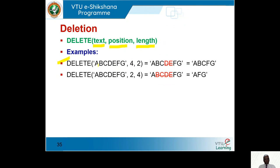The position is 4, and starting from position 4 we want to delete 2 characters. Similarly, if starting from the second position — B onwards — we delete 4 characters: B, C, D, E. After deleting, the result is A, F, G.